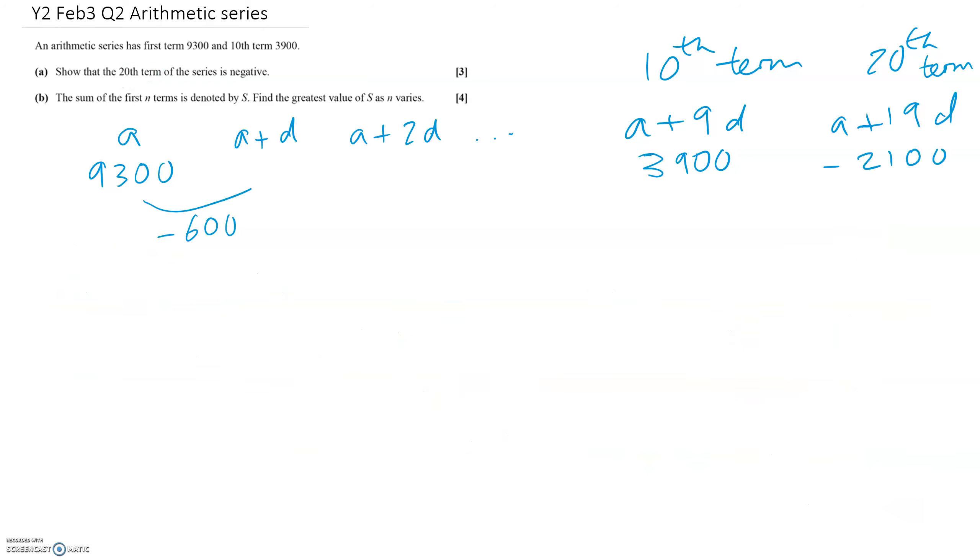Okay, so in B, the question is talking about the sum of the first n terms. So we're going to need to do the sum formula at some point. So the sum formula is, in the formula book, it's n over 2, 2a plus n minus 1d. So I need to use that at some point.